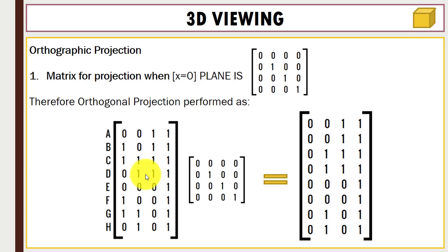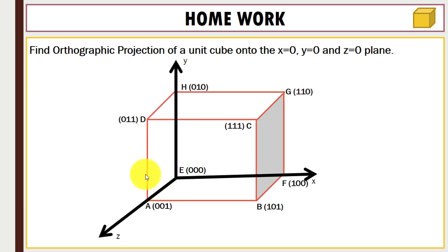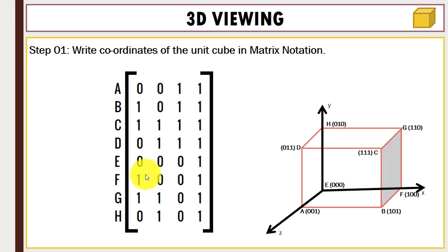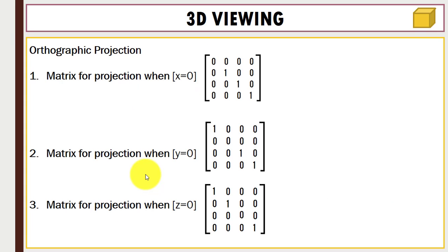To summarize: the first step is to write down all the coordinates in matrix form, then multiply with the projection matrix for x, y, and z. This is a simple example of orthographic projection. If you have any questions you can comment below, and thanks for watching.